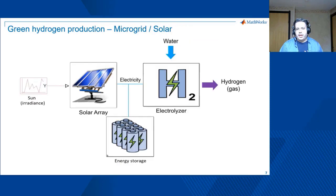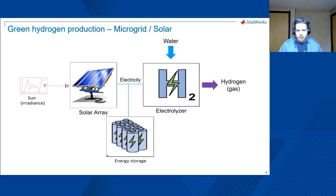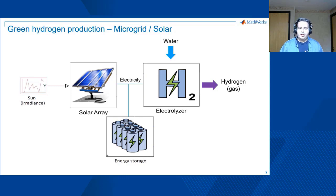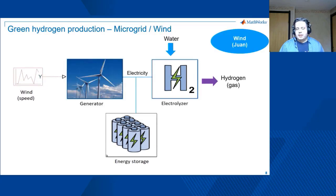If we start with a microgrid that is solar-based, those are the elements you're going to find: photovoltaic panels, an energy storage unit often with a battery, and then the electrolyzer, whereby electrical energy will result in hydrogen. In my case, I will be using a microgrid that is wind-based.